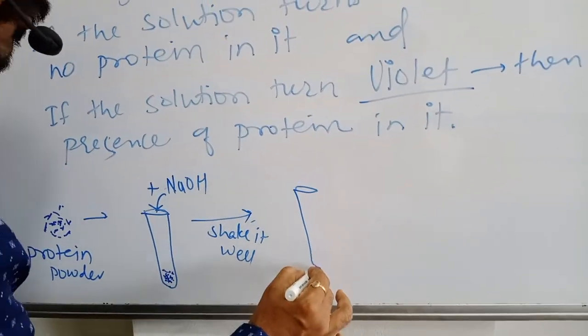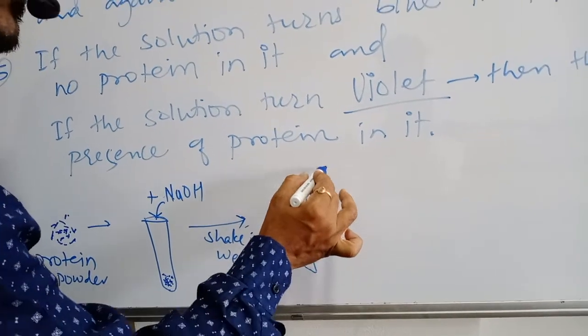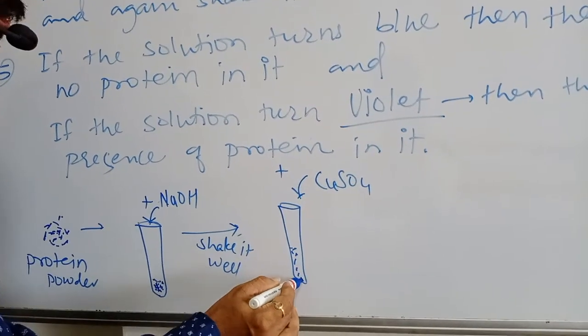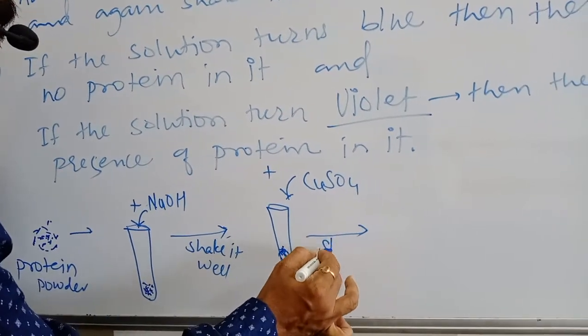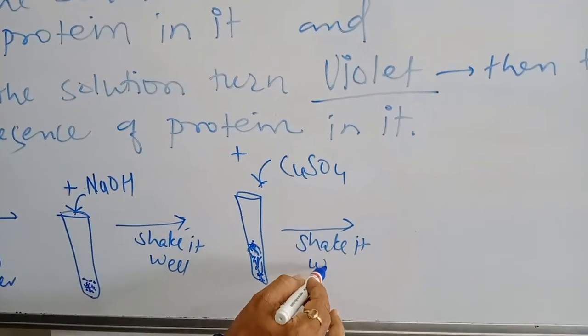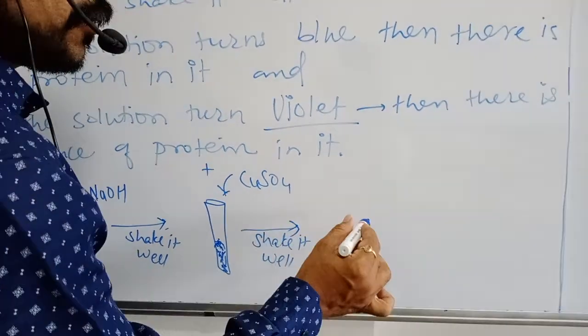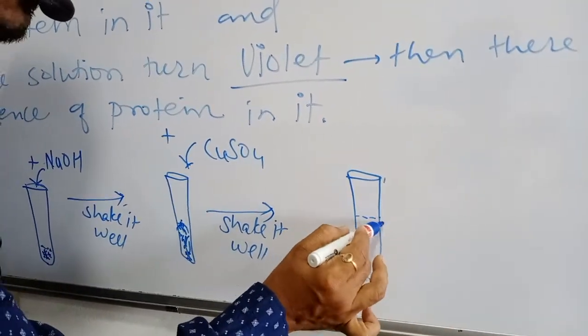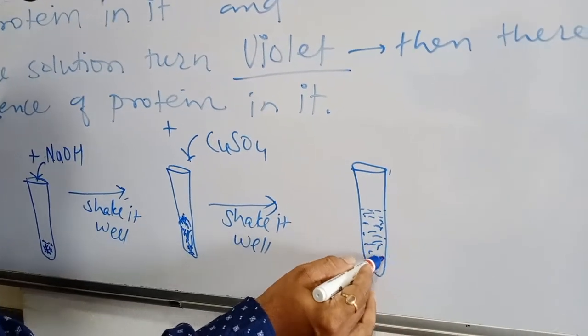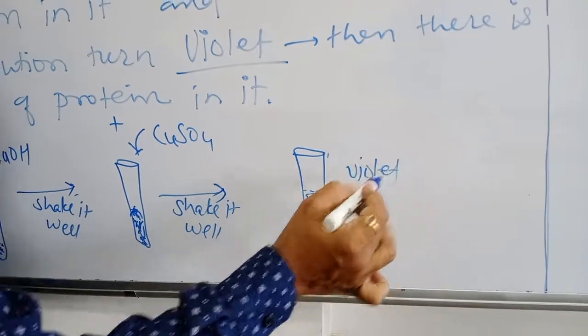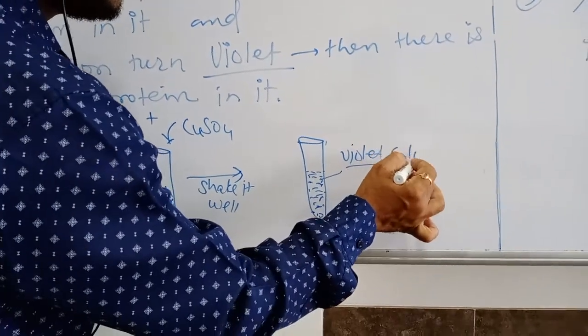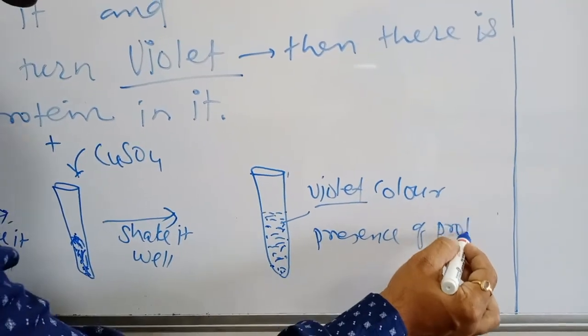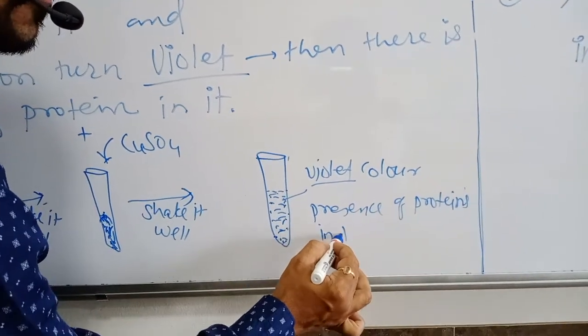Then again you have to add copper sulphate solution in it and again shake it well. Then after few minutes after the proper shaking you will be getting the color changed into violet. The solution gets converted into violet color which is the indication of presence of proteins in the given food item.